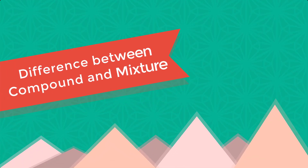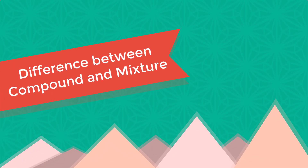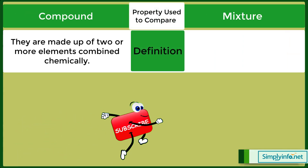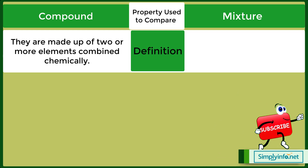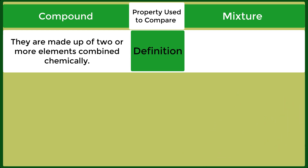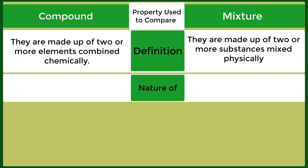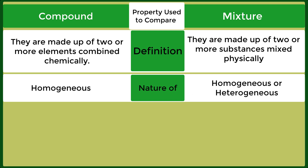Difference between compound and mixture. Definition of compound: they are made up of two or more elements combined chemically. Definition of mixture: they are made up of two or more substances mixed physically.